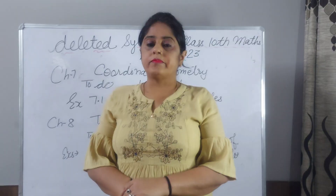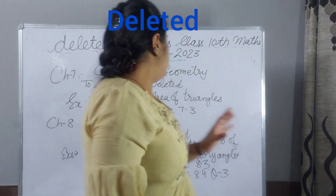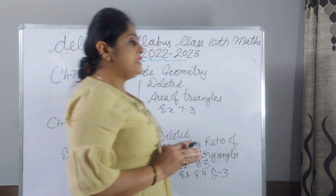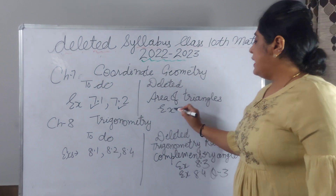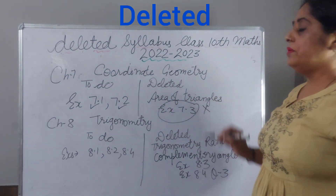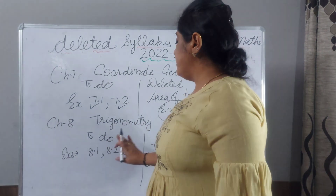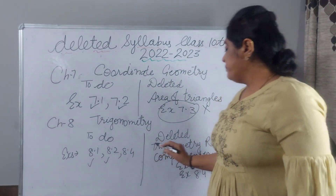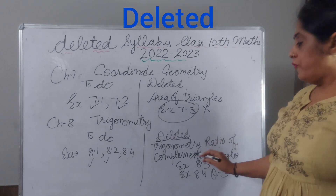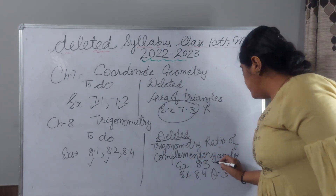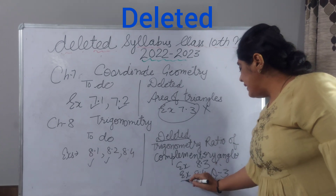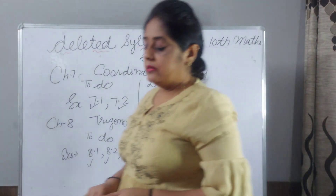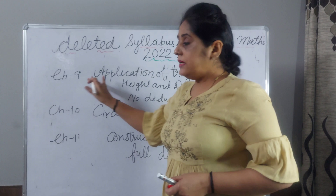Chapter 7, Coordinate Geometry: you have to do exercise 7.1 and 7.2. What is deleted: area of a triangle — exercise 7.3 you have to not do. For Chapter 8, Trigonometry: you have to do exercise 8.1, 8.2, and 8.4. What is deleted: trigonometric ratios of complementary angles — exercise 8.3 is deleted. Also, exercise 8.4 question number 3 is deleted.